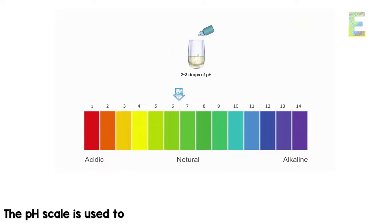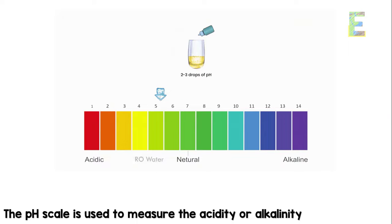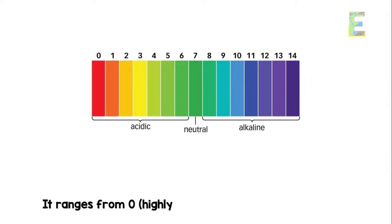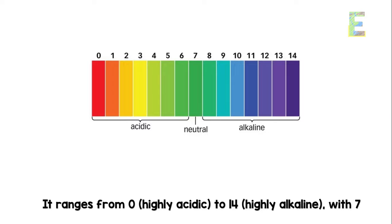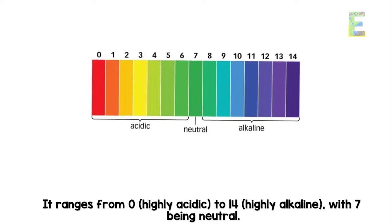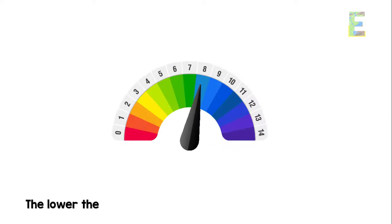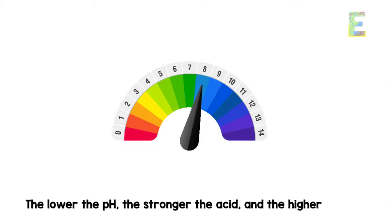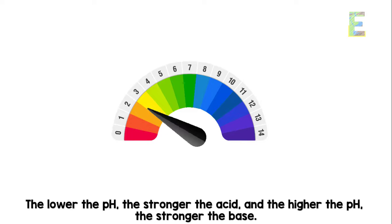The pH scale is used to measure the acidity or alkalinity of a substance. It ranges from 0, highly acidic, to 14, highly alkaline, with 7 being neutral. The lower the pH, the stronger the acid, and the higher the pH, the stronger the base.